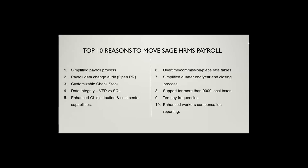Quarter-end and year-end processes are much more simplified in HRMS. There's no trial quarter close or final quarter close, and you don't have all the balancing and reconciliation between reports required in Abra Suite. Sage HRMS has built-in more than 9,000 local taxes — if you're in a jurisdiction with local taxes, that's a big advantage. We have 10 pay frequencies in Sage HRMS that accommodate school districts and government pay frequencies better than Abra Suite. There's also an enhanced workers' compensation calculation and reporting function. Those are the top 10 reasons.